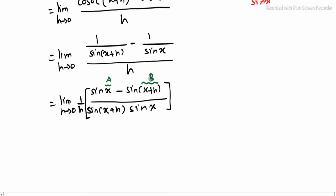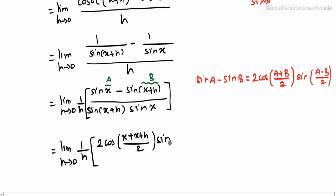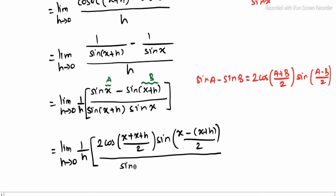So in the numerator, x denoted a, x plus h denoted b. So denote panna, it becomes sin a minus sin b format, expansion: 2 times of cos of (a plus b) divided by 2, into sin of (a minus b) divided by 2. Numerator apply pannra, and whole divided by sin of x plus h into sin x.